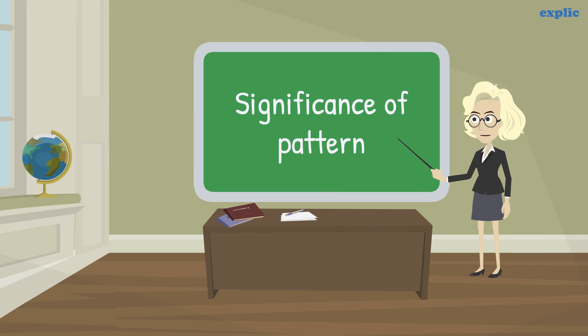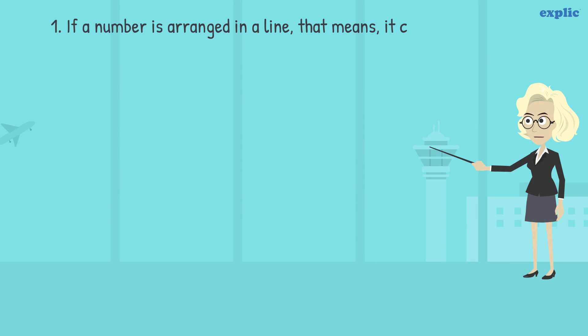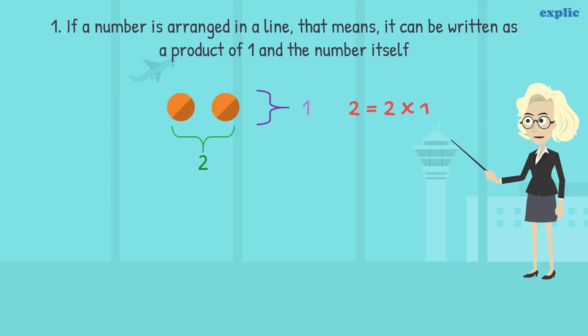But what is the significance of arranging a number in a pattern? Let's see. If a number is arranged in a line, that means it can be written as a product of 1 and the number itself. As we saw, every number can be arranged in a line except 1.